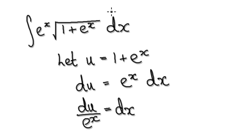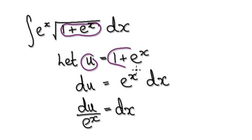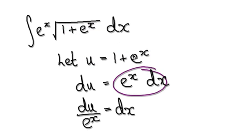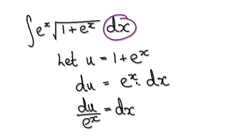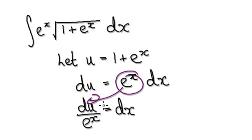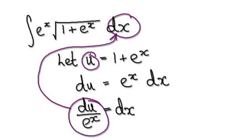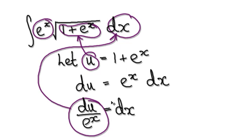So to integrate it, let u be this thing here. So if u equals this, then du will equal this. You ultimately want to get dx on its own, so divide both sides by this, so dx equals this thing here. So put this into the dx, and put the u into this bit here.